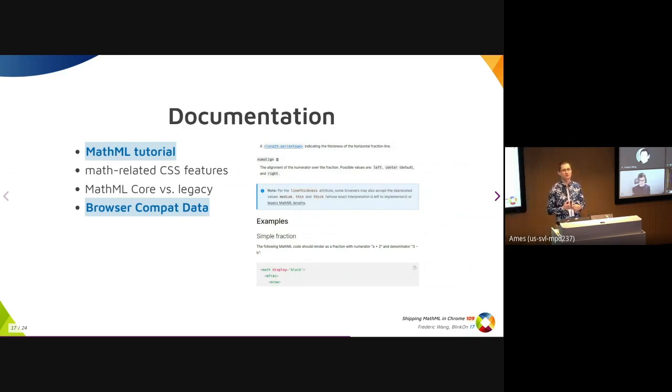Another thing reported by API owners during the intent to ship discussion was that documentation is really important if we want to release something and have web developers discover and play with it. We've done a big effort to update the documentation as well as related data, like browser compatibility data. We brought this gentle introduction to MathML, documented all the new math-related CSS features. But maybe the most important point is we switched the documentation to use MathML Core as a reference, so users know that's the thing to use, and legacy features still implemented in Firefox or WebKit are clearly marked as legacy, deprecated, or non-standard.